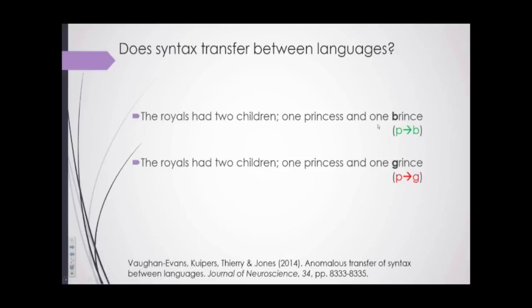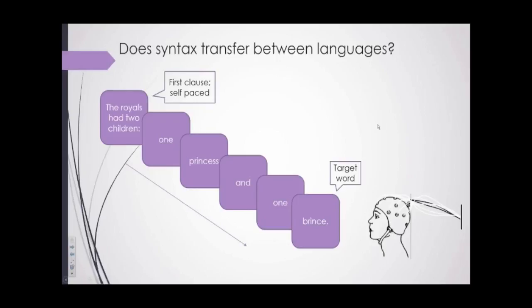So we manipulated English sentences and the sentence-final word so that they either adhered to the mutation rules — so you see 'brince' here, which is a legal mutation with a P to B change — or they did not, so we have 'grince,' which is an aberrant word; you would never have a P to G mutation in Welsh. We were interested in whether 'brince' is more expected than 'grince.' You might say any difference is simply a familiarity effect because participants are more used to seeing mutated words.